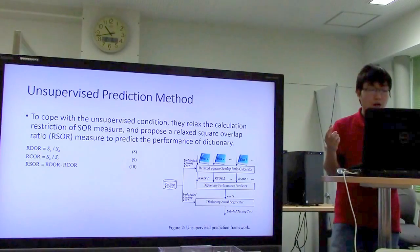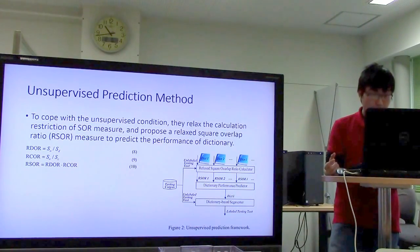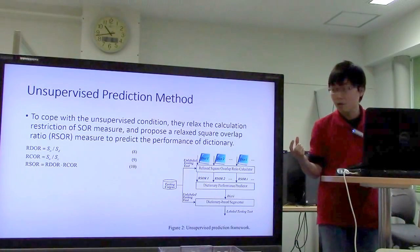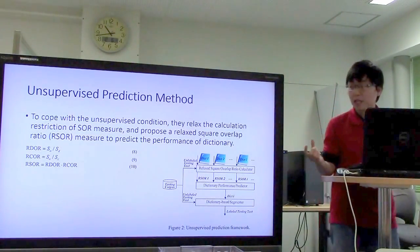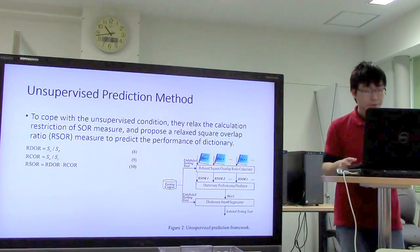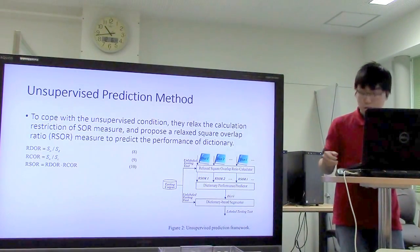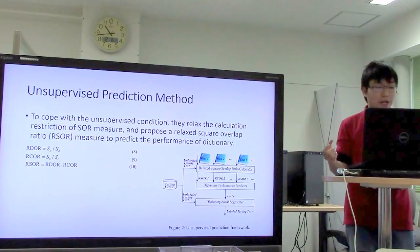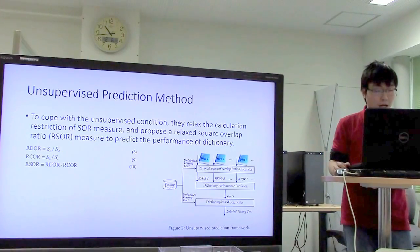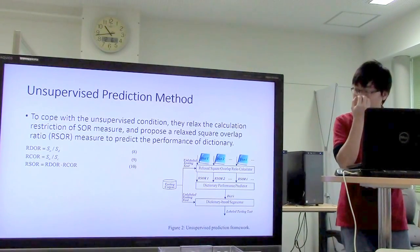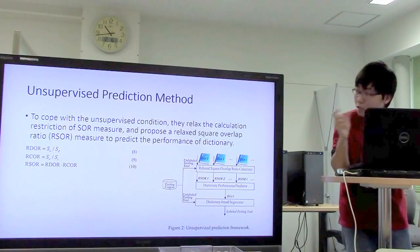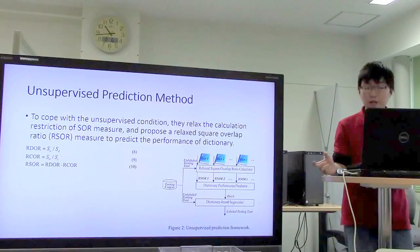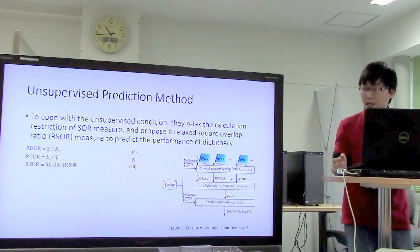The key difference between the two methods is how they count objects. The supervised method counts words occurring in the corpus and dictionary, while the unsupervised prediction method counts syllables occurring in both the corpus and dictionary. SO is denoted for syllables occurring in both dictionary and corpus, SD for syllables in the dictionary, and SC for syllables in the corpus.